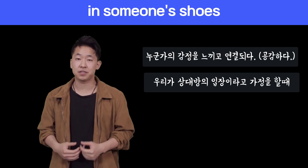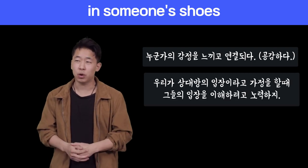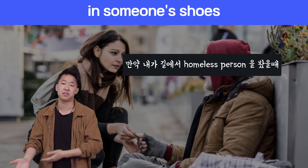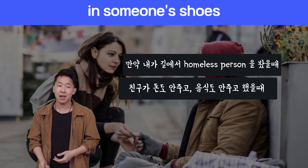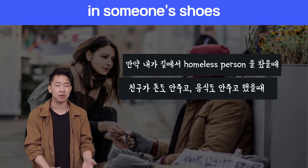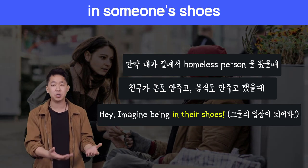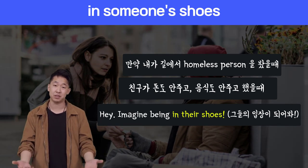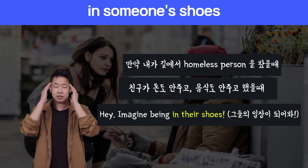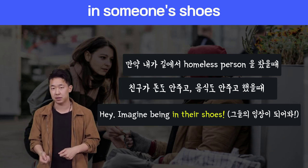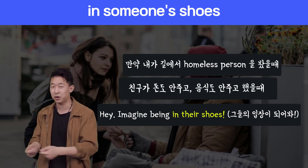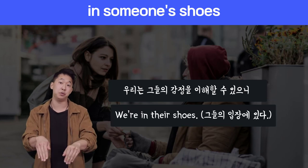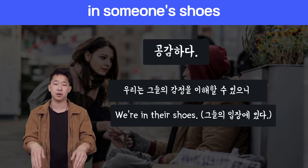When we want to imagine ourselves in someone else's shoes, we want to understand their feelings. So maybe if I see a homeless person on the side of the street and my friend doesn't want to give them any money or food, I would say, hey, imagine being in their shoes — they're really hungry, maybe they don't have a job. Then my friend might say, okay, let's go buy them some food. We go buy them food because we understand their feelings — we're putting ourselves in their shoes.